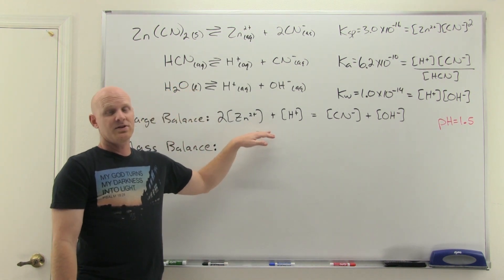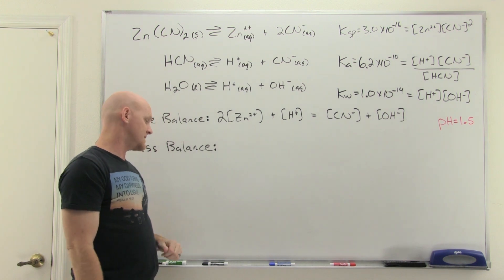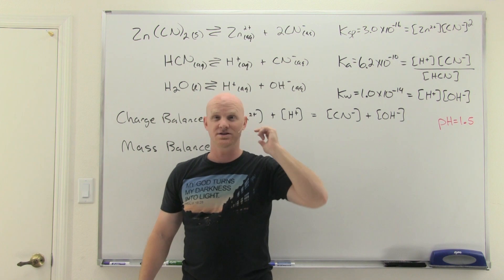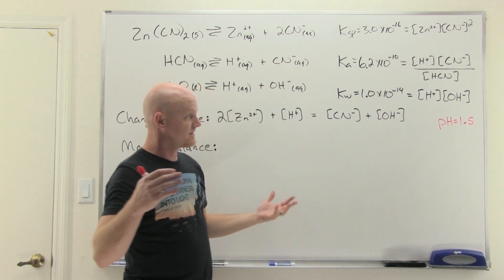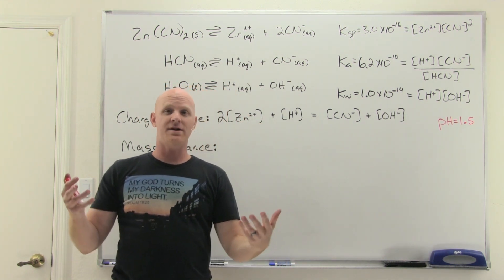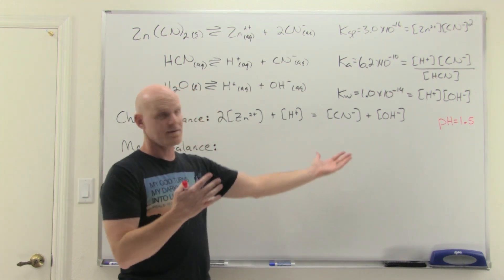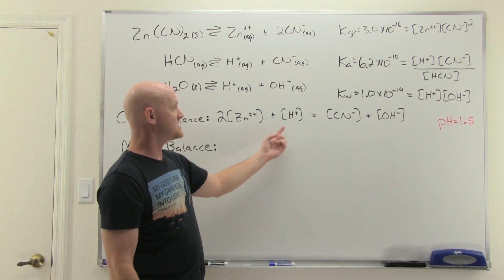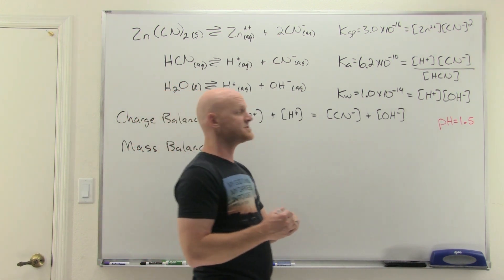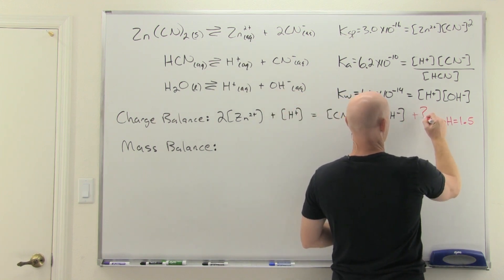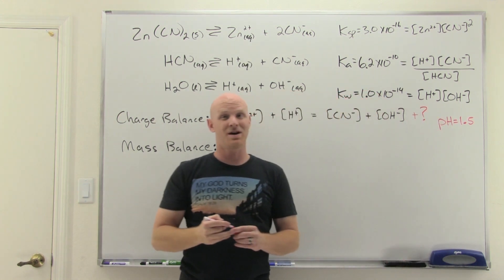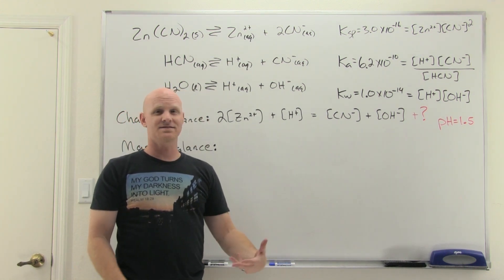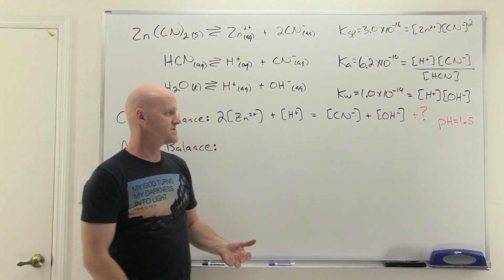This technically looks like our charge balance expression, but we have to account for one more thing — and this is super tricky. We're at pH 1.5. How do we get to pH 1.5? Well, somebody added a bunch of acid, or maybe there's a buffer at pH 1.5 — probably by adding hydrochloric acid or something. That means in addition to H⁺, there's some sort of conjugate base or something going on. I actually can't get a complete charge balance in this example, and this happens sometimes. So we'll move on.